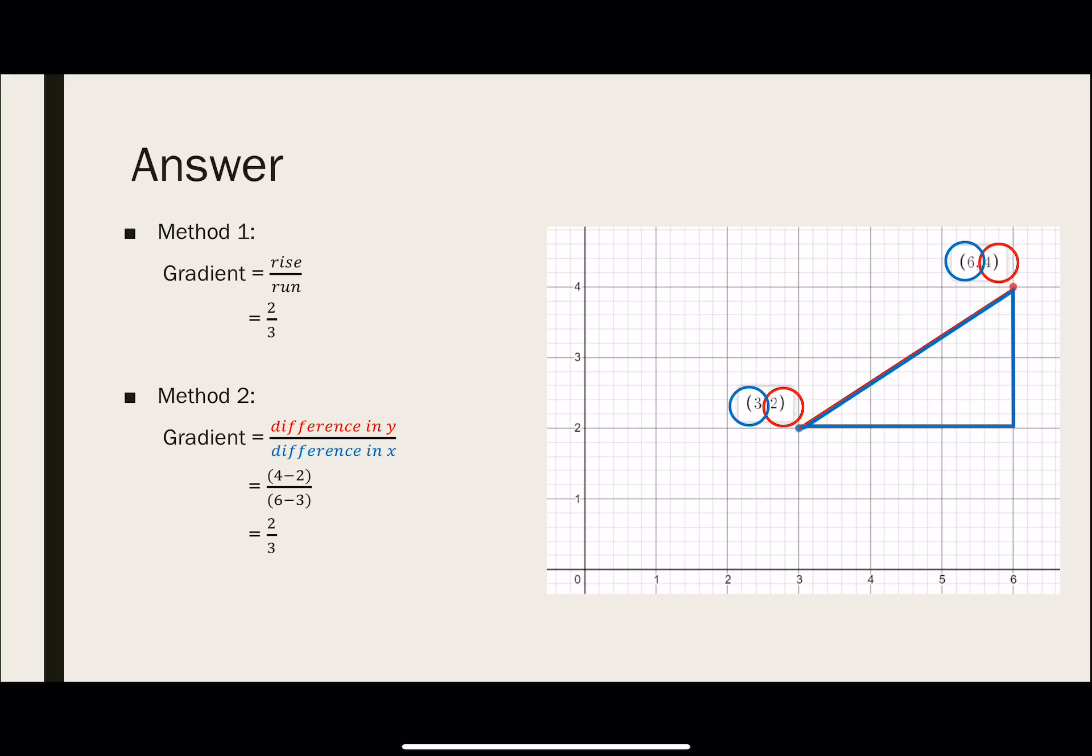So, this is the answer. Firstly, of course, you could draw it out like what you have been doing. So once you have drawn it out, you can see that the rise is 2 units, and the run is 3 units. Finding the gradient is just rise over run, 2 over 3. As this is an upward slope, there is no need to put a negative sign.